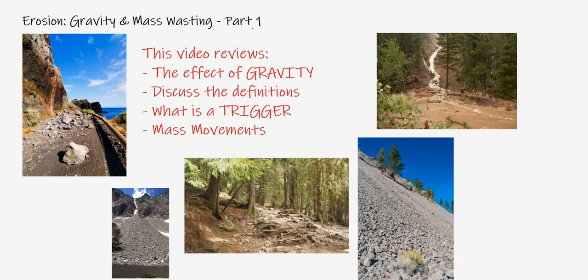So in this first part, we're going to look at the effects of gravity on the ground, surface and crust. Look at the different definitions that are associated with these types of movements caused mostly by gravity and look at what a trigger is, a catalyst that will initiate the movement of material. Look at different types and just introduce mass movements as a topic.